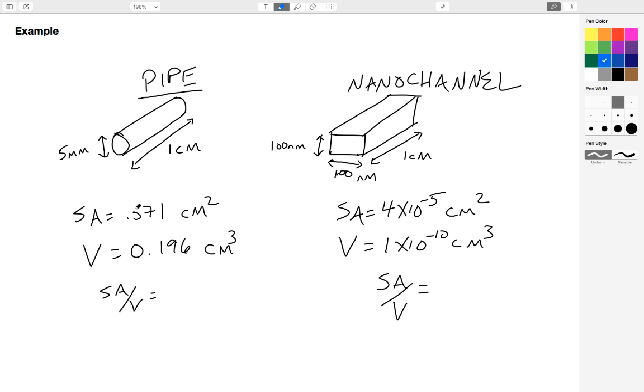Now if I calculate my surface area on this, I get 1.571 cm². If I calculate the volume, I get 0.196 cm³. If I divide the surface area by the volume, I get 800 per meter, so a surface area to volume ratio of 800.